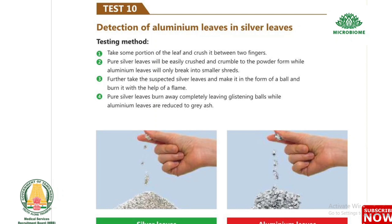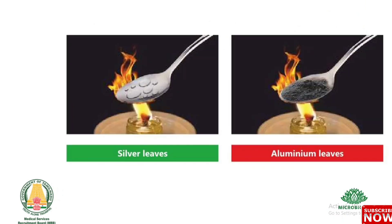Test 10: Detection of aluminium leaves in silver leaves (vark). Take a portion of the leaf and crush it between two fingers. Pure silver leaves will be easily crushed and crumble to powder form, while aluminium leaves will only break into smaller shreds. Further, make the suspected silver leaves into a ball and burn with a flame. Pure silver leaves burn away completely, leaving glistening balls, while aluminium leaves are reduced to grey ash.